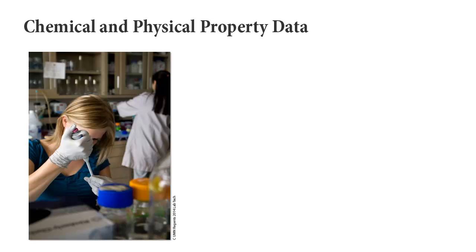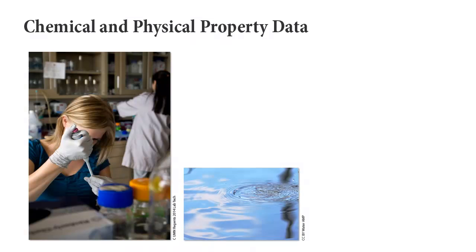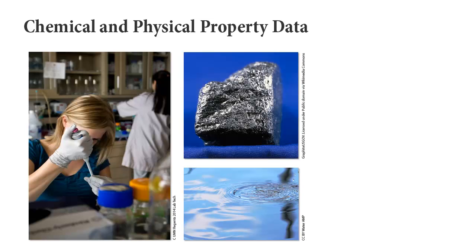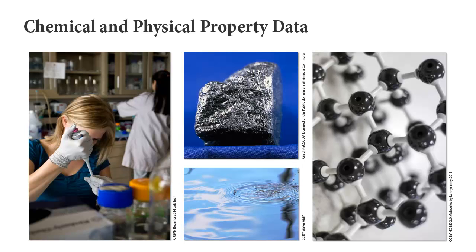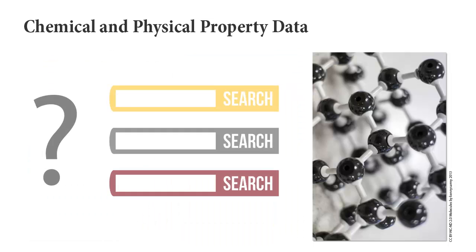Chemists depend on chemical and physical property data in their research for a number of reasons, including planning experiments and verifying and interpreting results. Finding data is not always easy because there is no one place where all types of data for all substances is located, and it is not always clear where to look or whether you have looked in the right places.